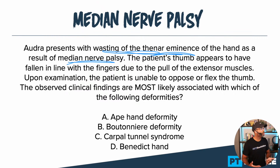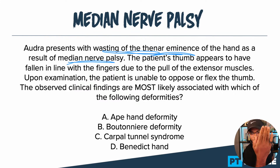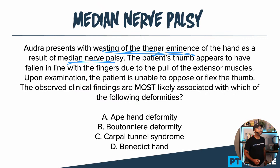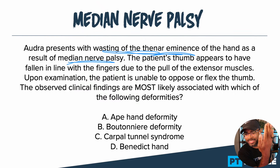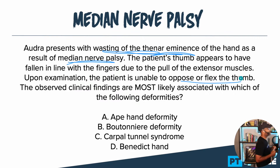It says the patient's thumb appears to have fallen in line with the fingers due to the pull of the extensor muscles — you better be able to pick up on this for the MPTE. It's talking about the thumb being in that adducted position. It says upon examination the patient is unable to oppose or flex the thumb, which fits — the thumb is more in that adducted position, not able to flex it, not able to oppose it, and pretty much not able to abduct it either.